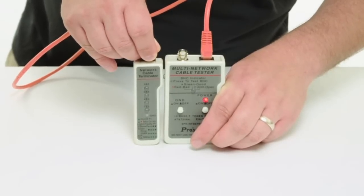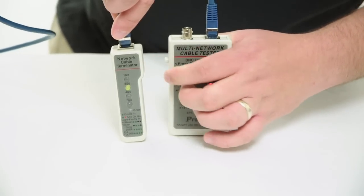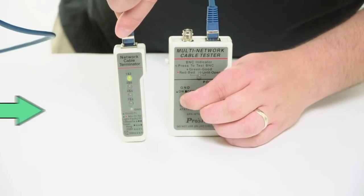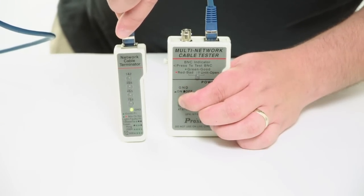The tester can also be used to test shielding. By simply pushing the GND button, the LED will light up with all green except the LED of pair 3 and 6 to indicate proper shielding.